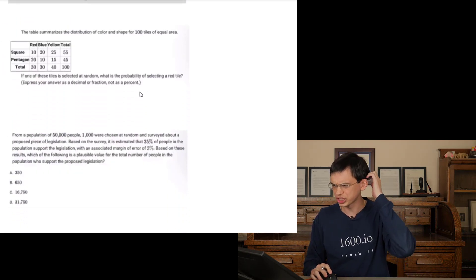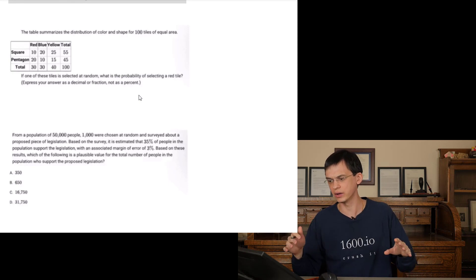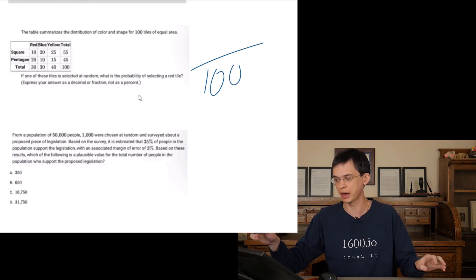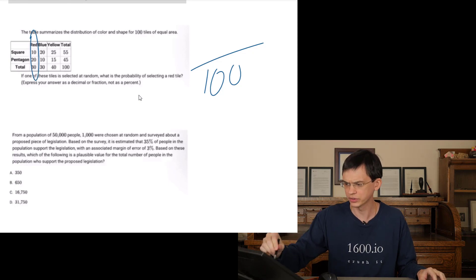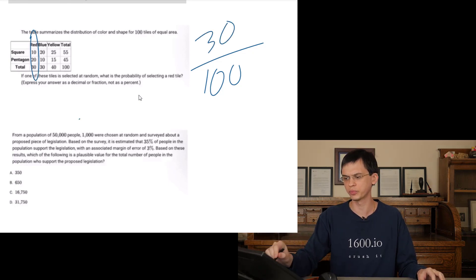Table distribution and shape 100 tiles. If one of the tiles one of all the tiles is selected at random out of all 100 tiles what's the probability of selecting a red tile? There's 30 total red tiles so 30 over 100, 0.3.